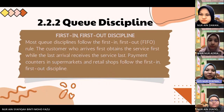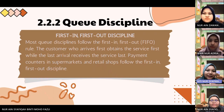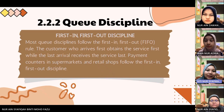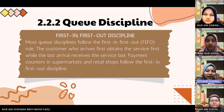Next is queue discipline. The queue discipline used in Akon Jaya Supermarket is first-in-first-out discipline, which is FIFO. Most queue disciplines follow the first-in-first-out rule. The customer who arrives first obtains the service first, while the last arrival receives the service last. Payment counters in supermarkets and retail shops follow the first-in-first-out discipline.